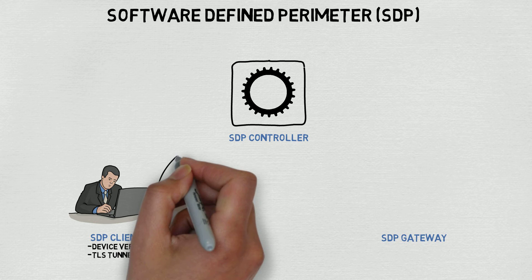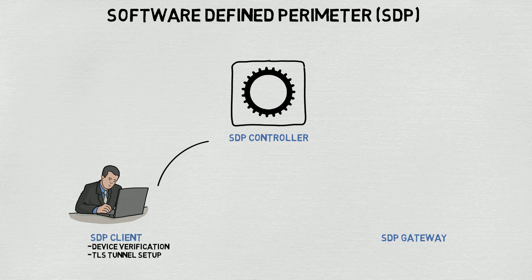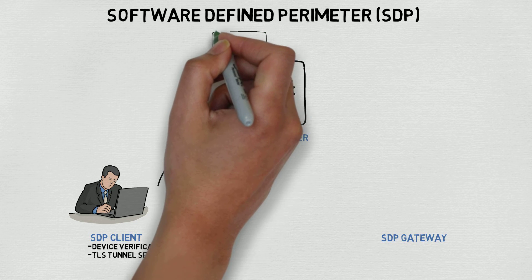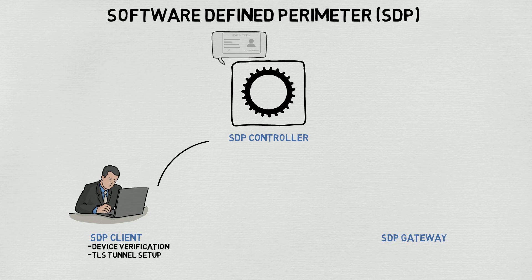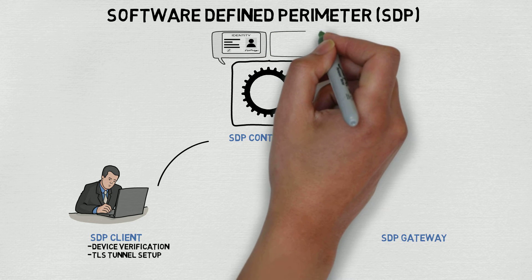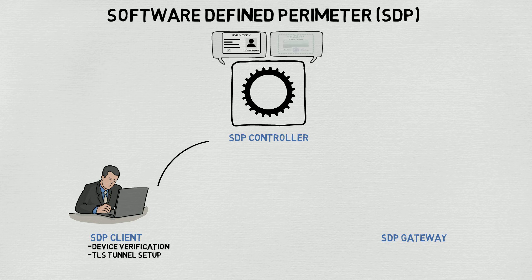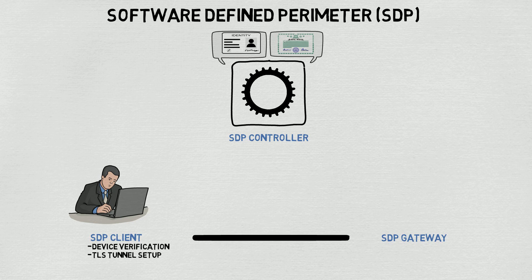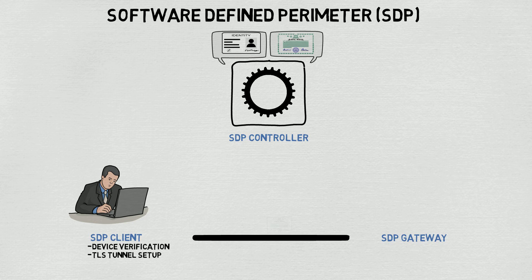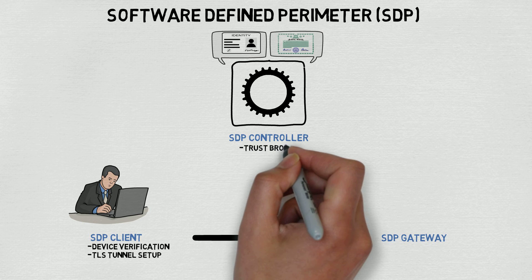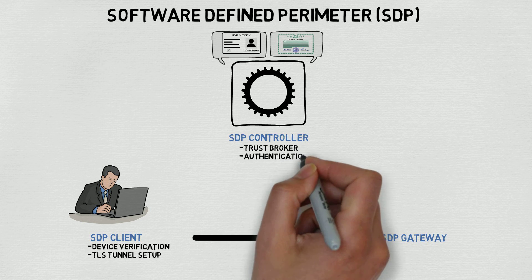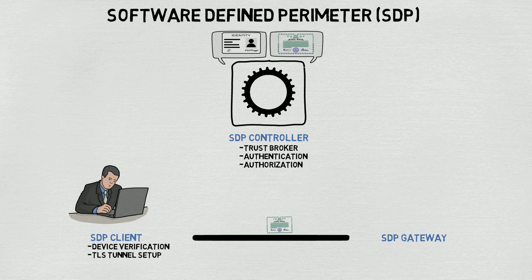The SDP controller functions as a trust broker between the client and the backend resource. The controller ties into your IDM solution to authenticate and check authorization for any given request. The authentication could come in the form of PKI, OpenID, SAML, Active Directory, or many other forms. The controller also carries a CA which sets up an encrypted tunnel between the client to the remote resource. The key thing here is that the controller only provides access for the specific resource the client is requesting and has authorization for.